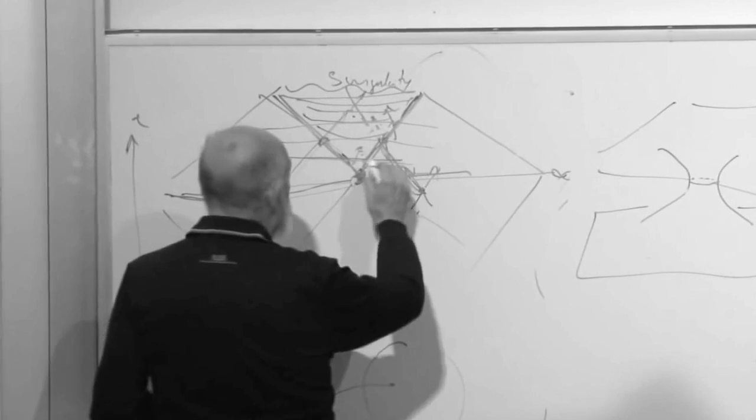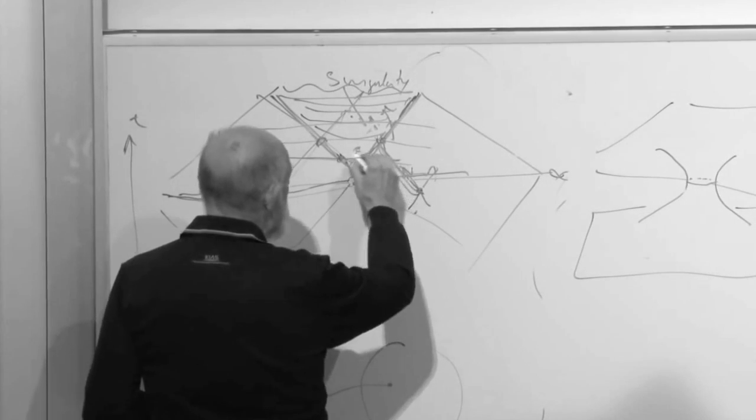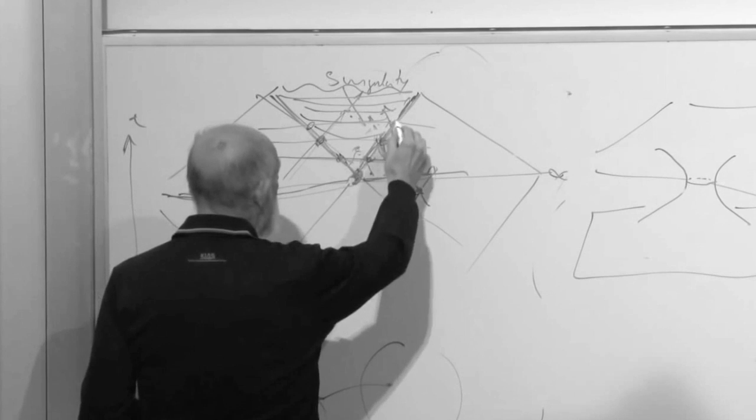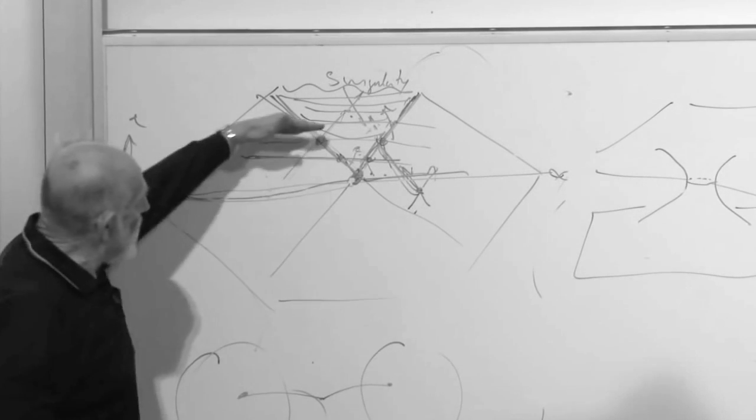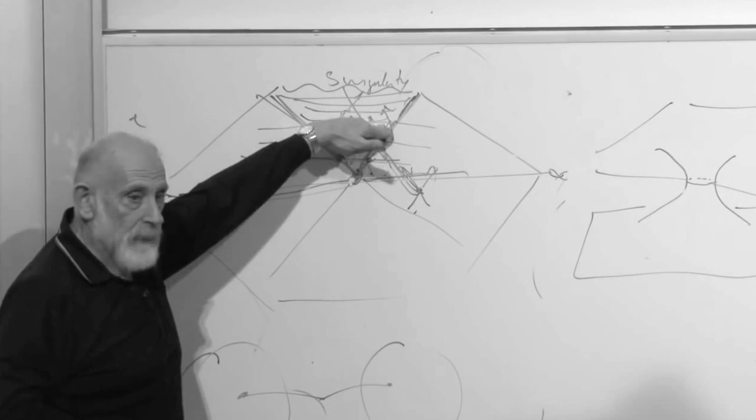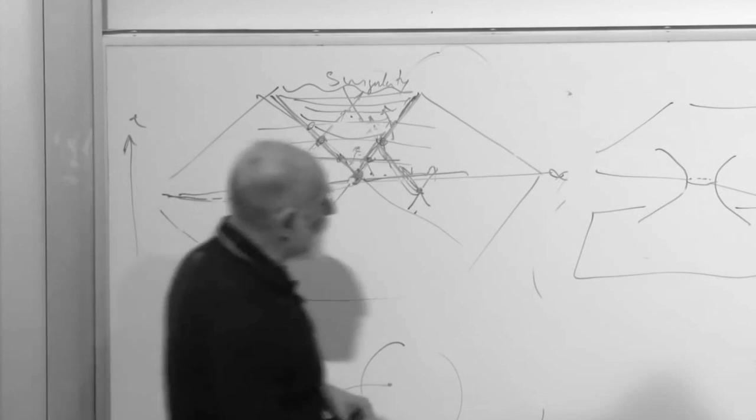As time goes forward, the horizons start to separate. The two horizons of the two black holes start to separate and leave between them a region of space. So what does that look like?